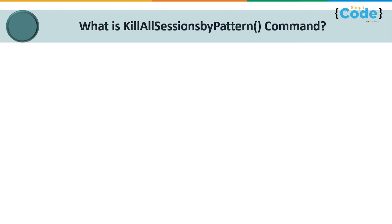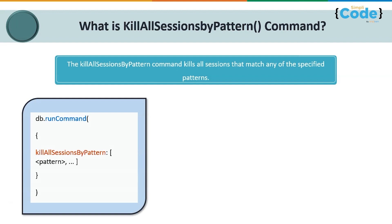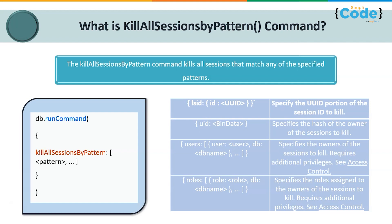The kill all sessions by pattern command kills all sessions matching any of the specified patterns. The syntax is db.runCommand({ killAllSessionsByPattern: [{ pattern }] }). There are four pattern choices: you can specify the UUID portion of the session ID to terminate; specify the UID and bin data to identify the hash of the session owner; specify the owner of the session directly; or specify the role assigned to the owner of the session — the latter two require additional privileges.